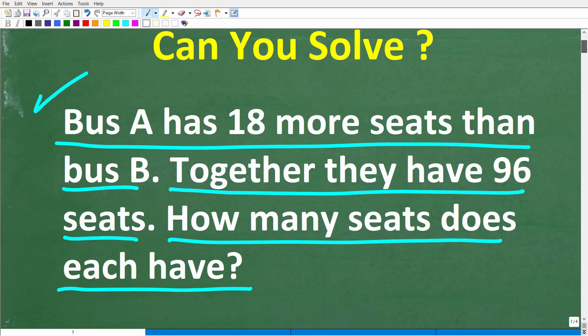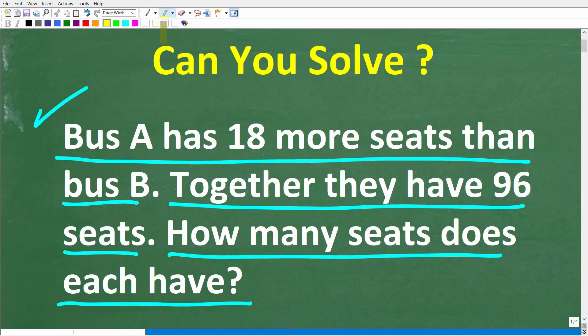Now before I show you the answer, let's take another look at the problem. So Bus A has 18 more seats than Bus B. Together they have 96 seats. How many seats does each bus have?